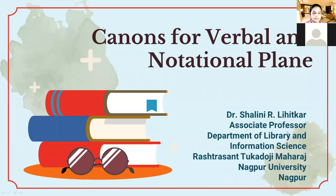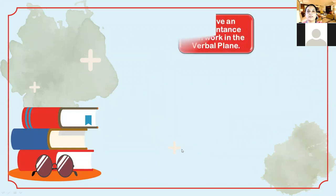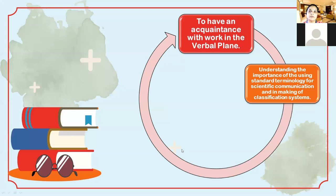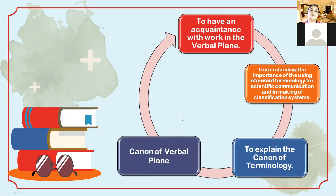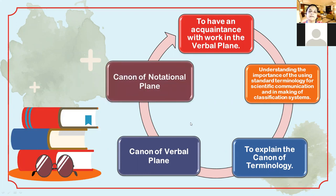For the verbal plane and notational plane, only three canons were left — meaning two plane canons were remaining. We have completed our idea plane canons, and you have observed how many canons are there in the idea plane. In the idea plane, we are seeing how a concept should be generated or evolved, and based on that concept we are logically thinking and making groups — meaning, what will be the subject.